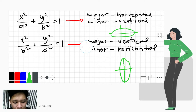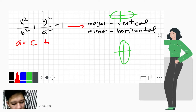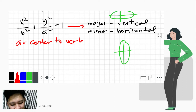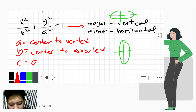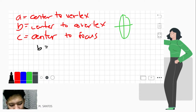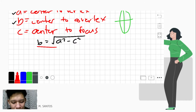Just as discussed in the last video, 'a' is the distance from the center to the vertex or vertices, 'b' is the distance from the center to the co-vertex, and 'c' is the distance from the center to the focus. We assume that b equals the square root of a squared minus c squared. Whichever has the larger value is our 'a', and this is how our formula will work.